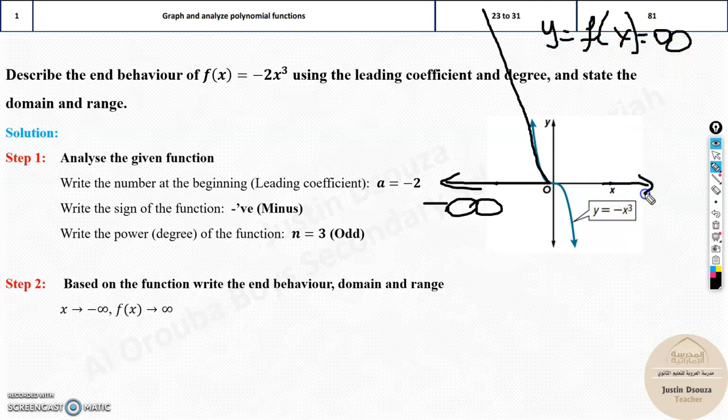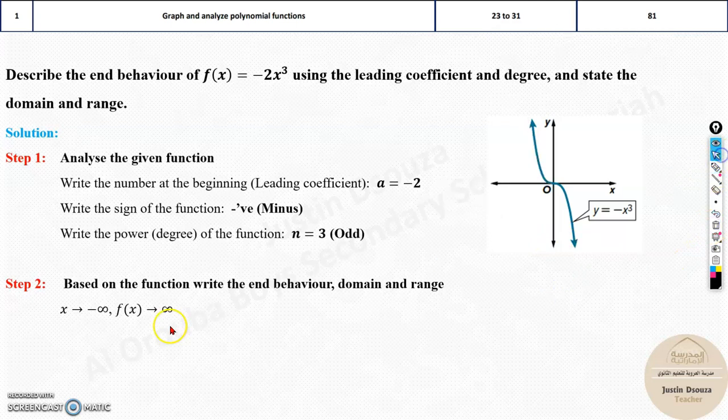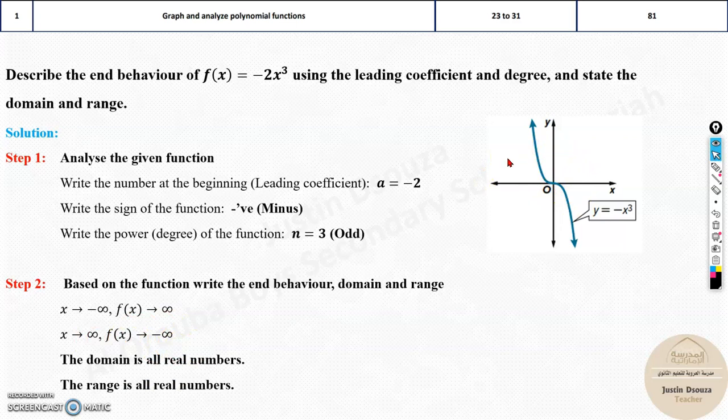Similarly, as we go on to positive infinity in the x, it goes on to negative infinity, minus infinity. So these are the end behaviors. And then the domain is all real numbers and range is also all real numbers for a cubic graph.